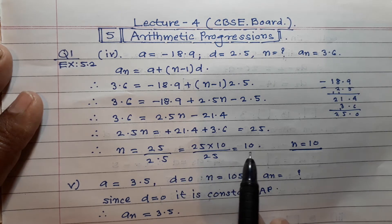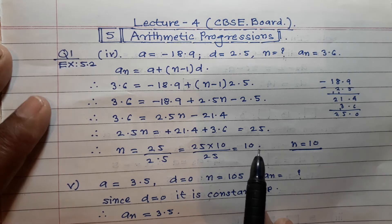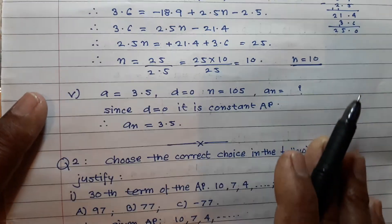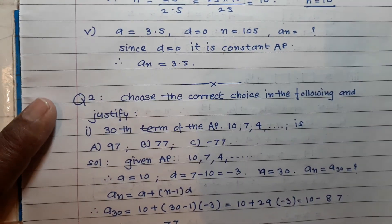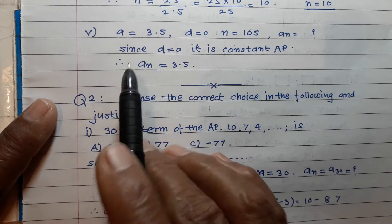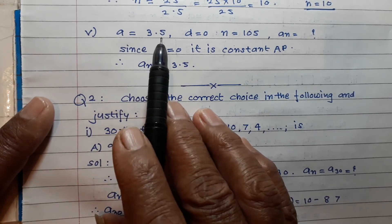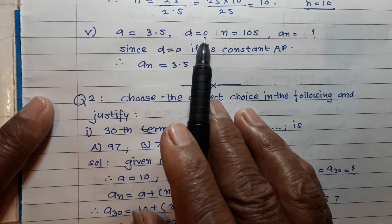Therefore n = 25 ÷ 2.5. Simplifying: 25 × 10 ÷ 25 = 10. So n = 10.